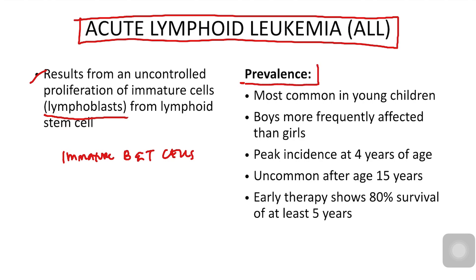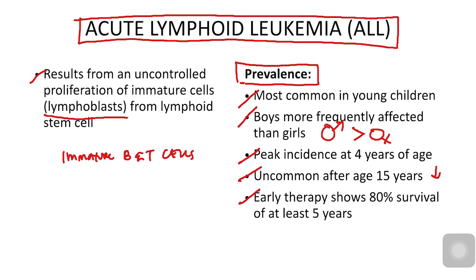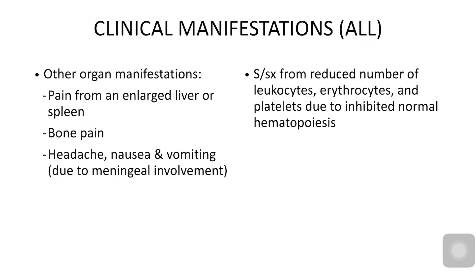A key difference between AML and ALL is prevalence by age: AML peaks at 67 years, while ALL is common in young children, peaking at four years of age, and affects boys more frequently than girls. After age 15, prevalence decreases. With early therapy, children with ALL have an 80% survival rate of at least five years.